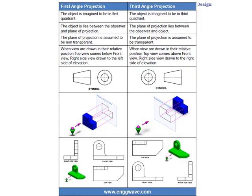Let's recap the differences between first angle and third angle projection. In first angle, the object is in the first quadrant; in third angle, the object is in the third quadrant. In first angle, the object is between the observer and the plane. In third angle, the plane sits between the observer and the object. The plane of projection is assumed to be non-transparent in first angle - like a shadow - while in third angle projection we assume it is transparent, so we can see through and project the image onto the plane itself.